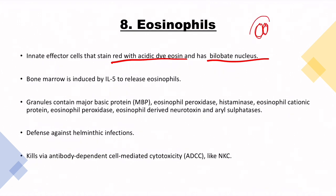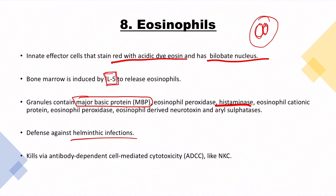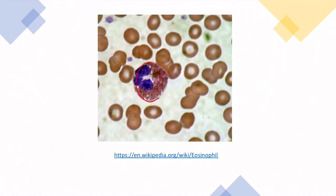Eosinophils stain red with the acidic dye eosin and have a bilobate nucleus. Bone marrow is induced by interleukin-5 (IL-5) to release eosinophils. Their granules contain major basic protein, eosinophil peroxidase, histaminase, and others. Most importantly, remember major basic protein and histaminase. Eosinophils help defend against helminthic infections and also use the ADCC process to kill cells, similar to natural killer cells.